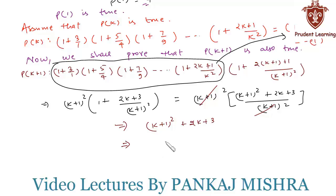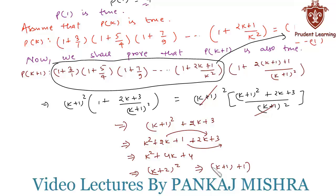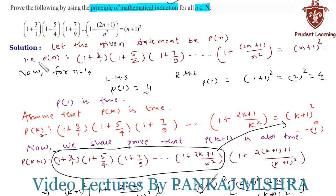We are left with (k+1)² + (2k+3). Expanding (k+1)² gives k² + 2k + 1, so the full expression is k² + 2k + 1 + 2k + 3 = k² + 4k + 4, which equals (k+2)². Writing (k+2) as (k+1+1), we get (k+1+1)². Thus P(k+1) is true whenever P(k) is true. Hence by the principle of mathematical induction, P(n) is true for all natural numbers n.